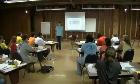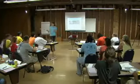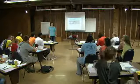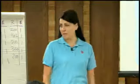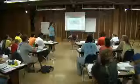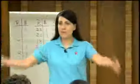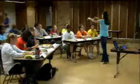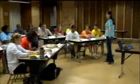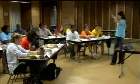Once the students are divided into towns and seated with their companies, present the problem. Each table represents a firm, and there is a pollution problem in the town. In the process of producing goods and services valued by the people in your region, three firms in each town emit a total of 90,000 tons of yuck. Towns are somewhat close together and are part of the same region.